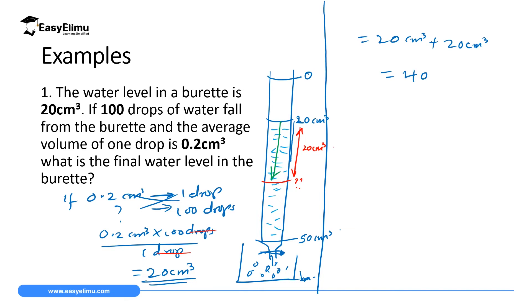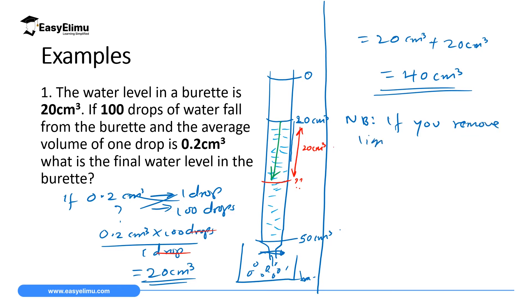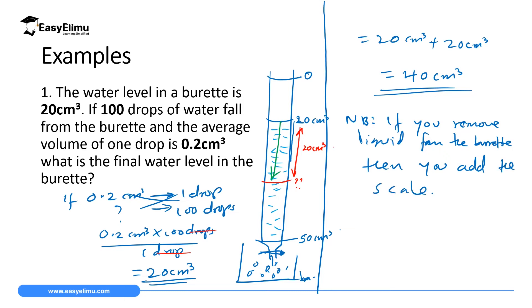Important note when using a burette: if you remove a liquid from the burette, you add to the scale reading. In this example we removed 20 cm³, the initial was 20 cm³, so we added — giving a final reading of 40 cm³.